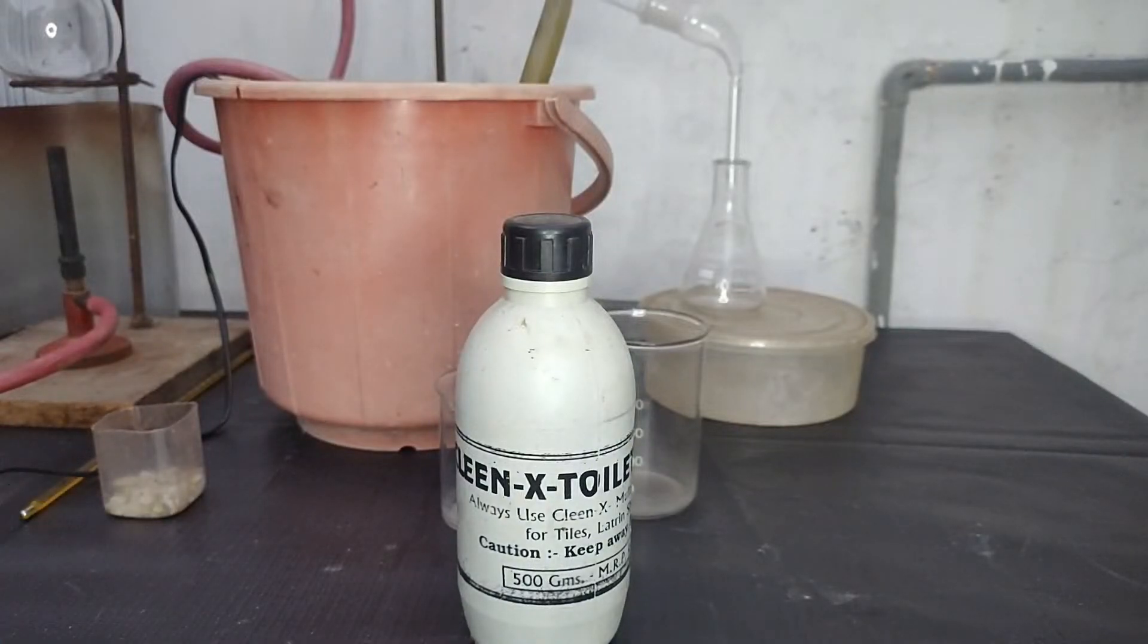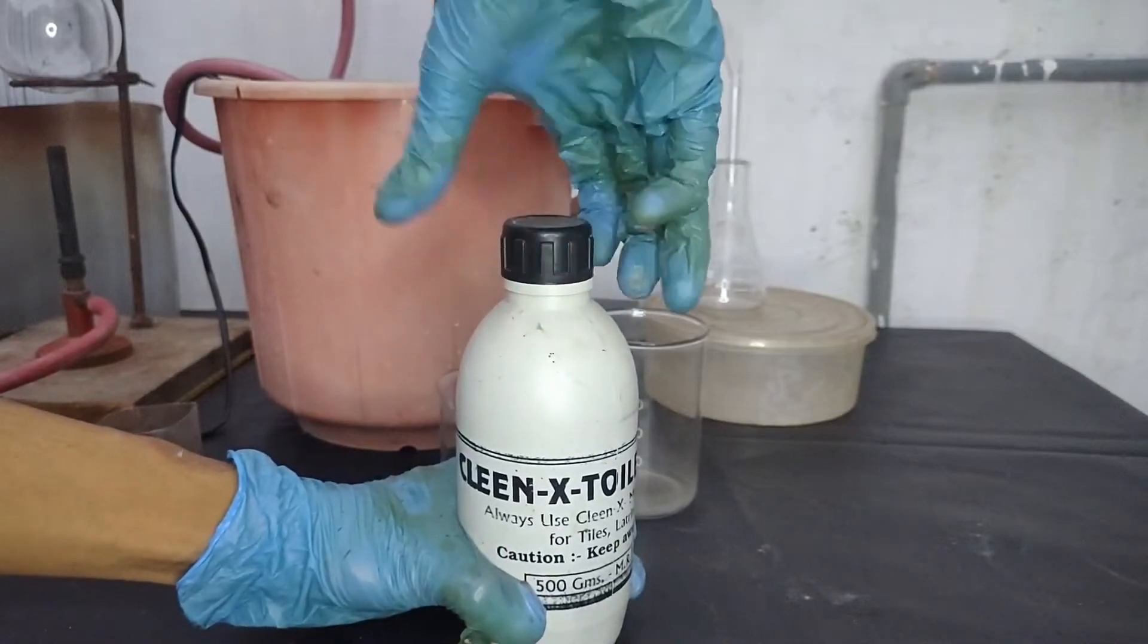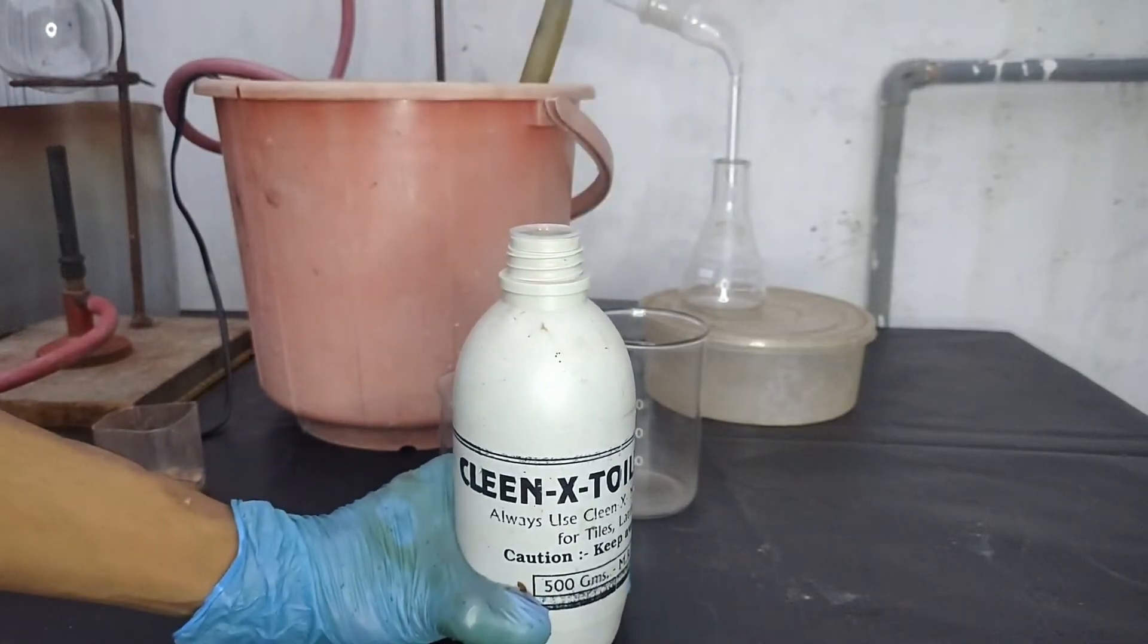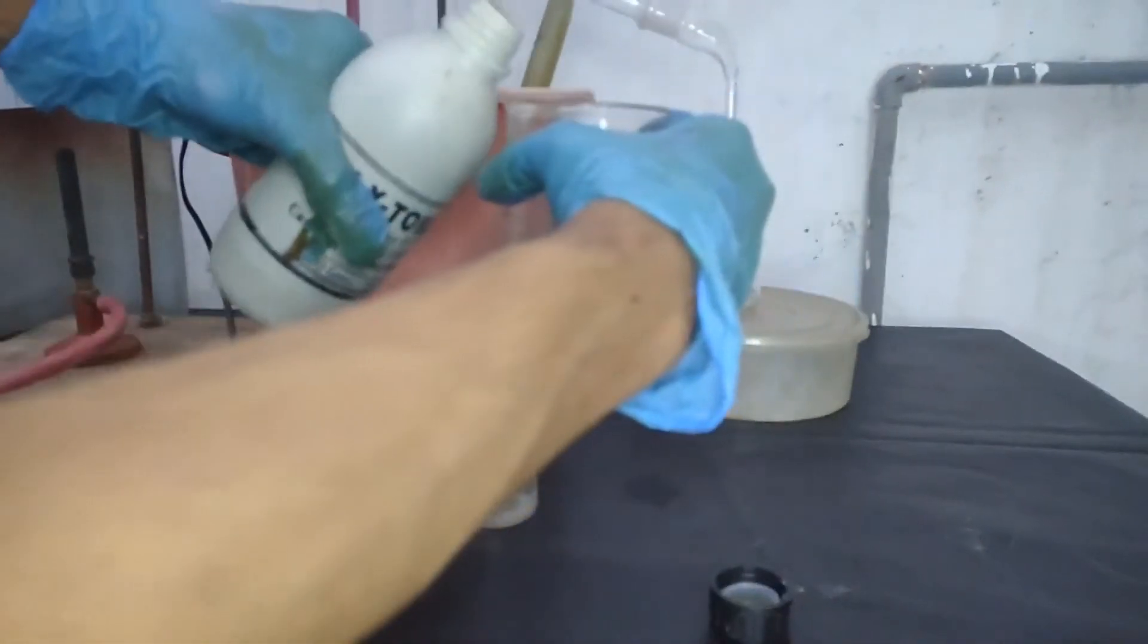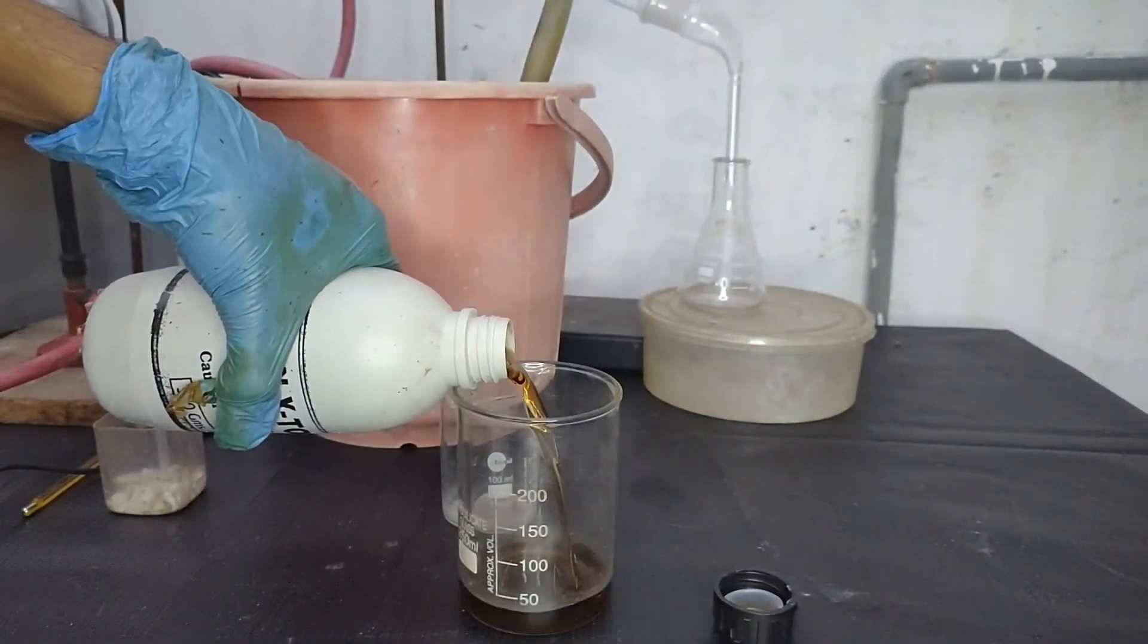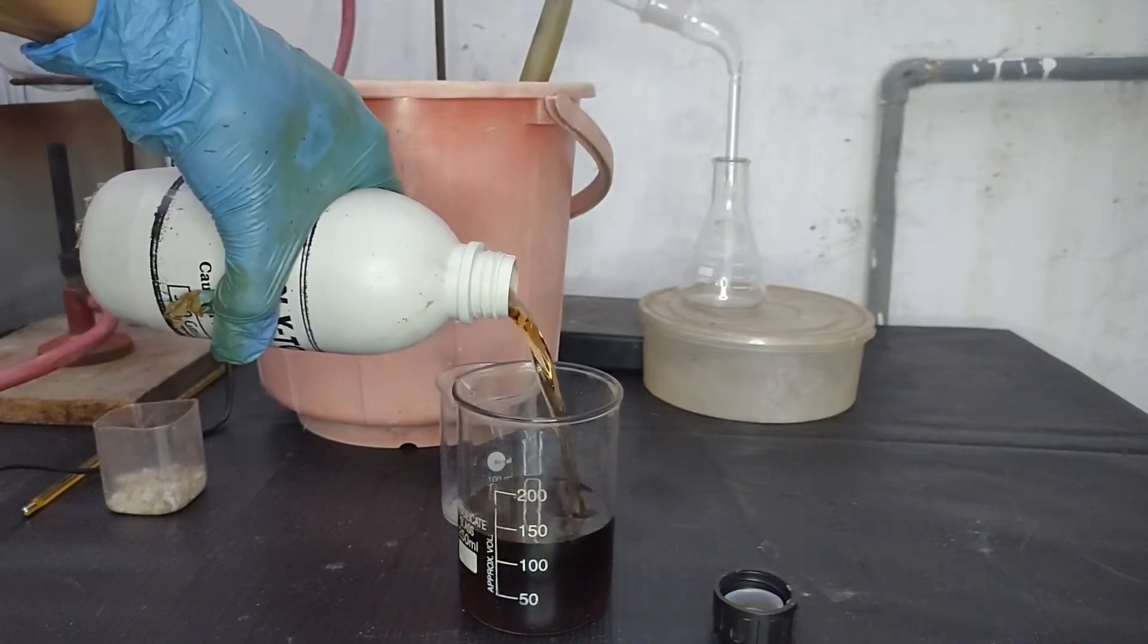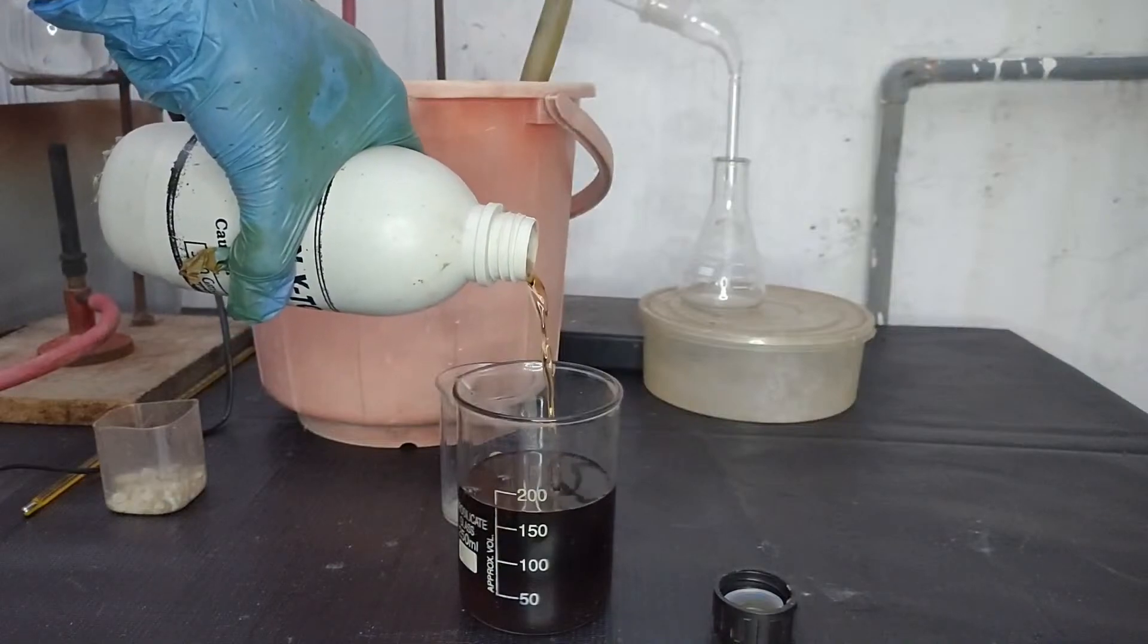In this video I will try to concentrate my drain cleaner sulfuric acid which has a concentration of around 90 to 92 percent. Over here I am taking 200 ml of drain cleaner sulfuric acid. As you can see it has a brown color.